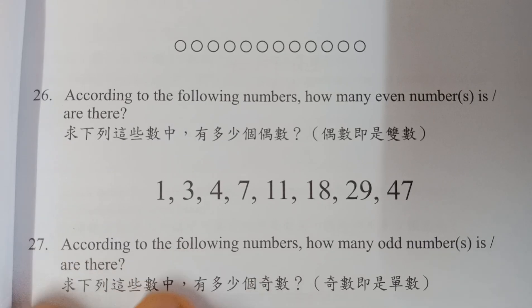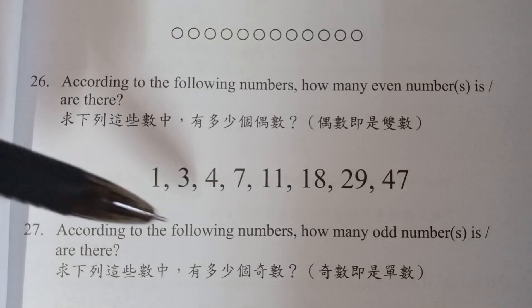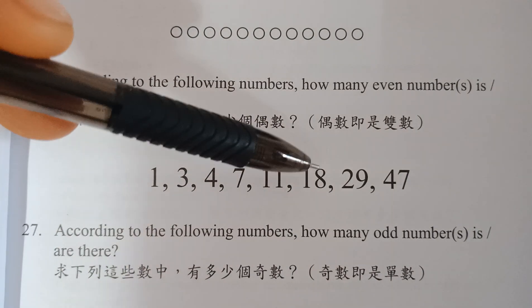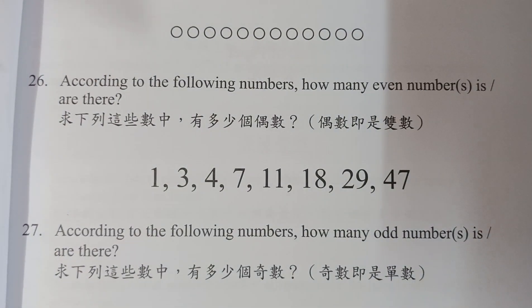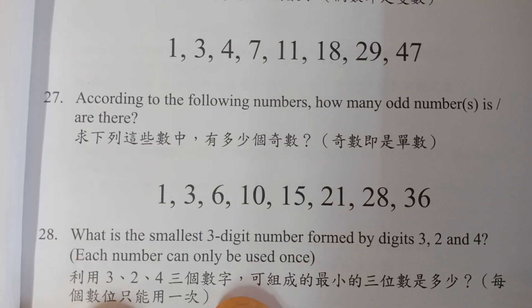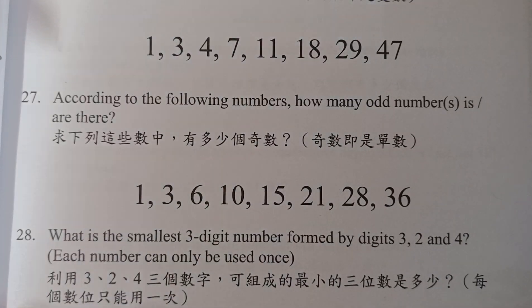Number twenty-six: according to the following numbers, how many even numbers are there? There are only two even numbers: 4 and 18. The answer is two.